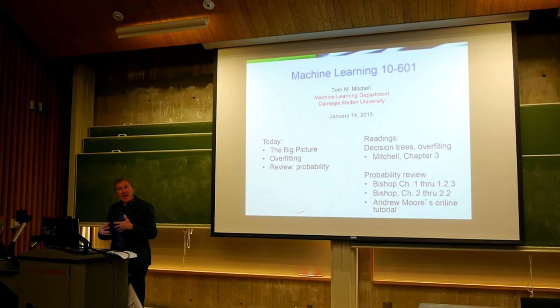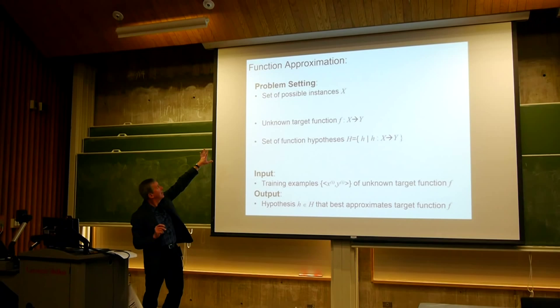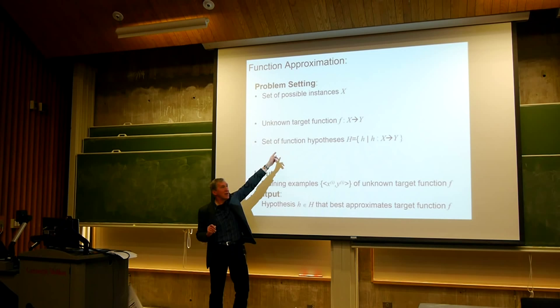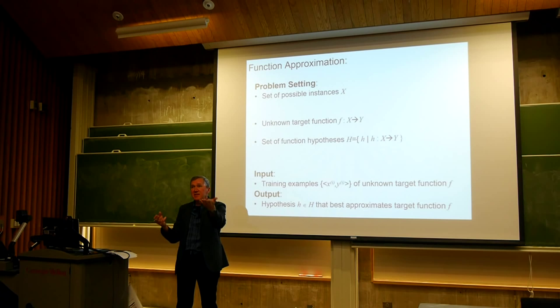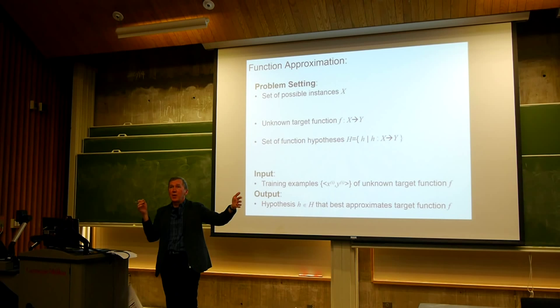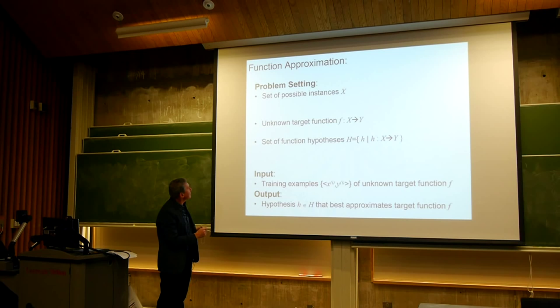We'll finish off decision trees and use that as a case study for making more general remarks about function approximation. In function approximation we're trying to learn some unknown target function f from some X to some Y — it might be from emails to spam or not, or predicting whether our friend would play tennis based on attributes like humidity and temperature.